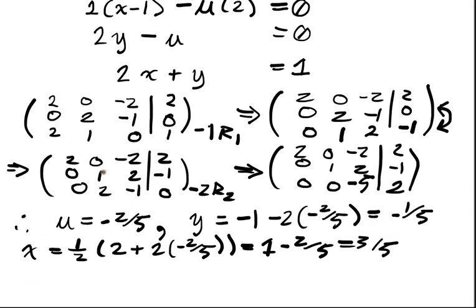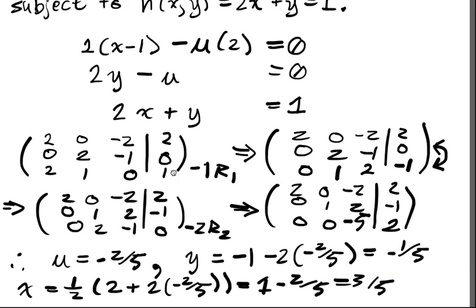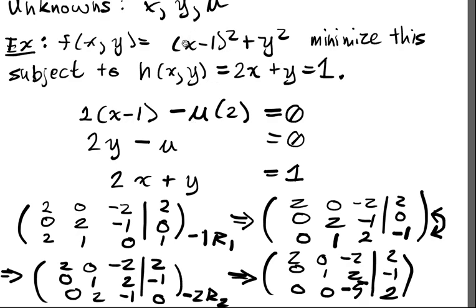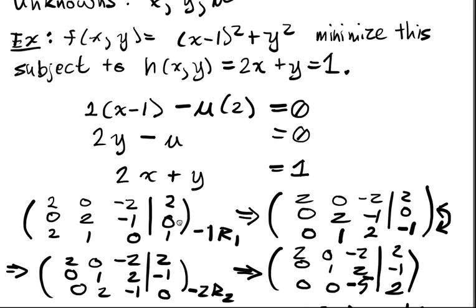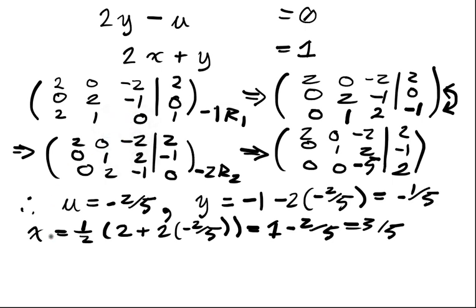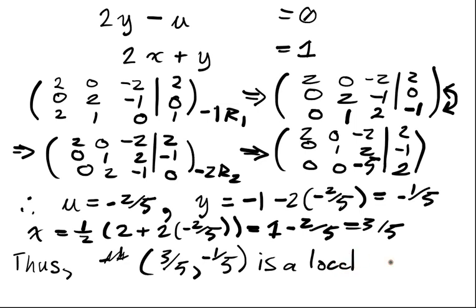And so, and you can show for yourself, or you can just look at it, you'll notice that this thing is positive definite. And therefore, we conclude that the point (3/5, -1/5) is a local min for this constrained optimization problem.